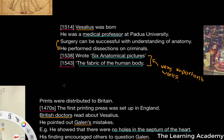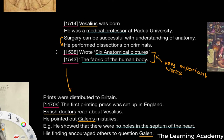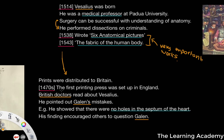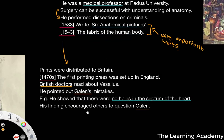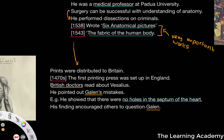What also signified the age of the Renaissance was the fact that prints could be distributed — in the 1470s, the first printing press was set up in England, even before Vesalius was born or wrote his works. Prints of his work could be distributed worldwide, and this was especially important as it meant the knowledge he collected could be spread across England. British doctors would read about Vesalius and use his works to point out and criticise the mistakes of Galen.